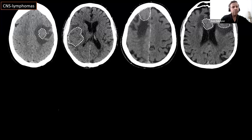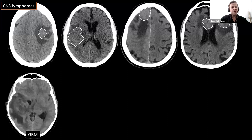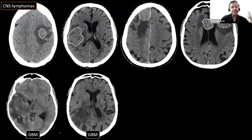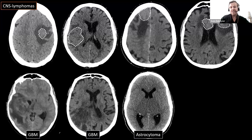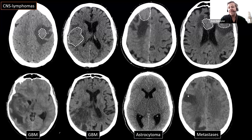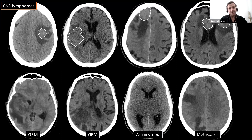Let's compare with other frequent tumors. Glioblastomas are mainly hypodense, sometimes with hemorrhagic dense components. A bithalamic astrocytoma shows swollen hypodense thalami. Cerebral metastasis may only show edema on CT without visible tumor. In contrast, the fact that a CNS lymphoma is relatively dense on unenhanced CT is a very characteristic finding.